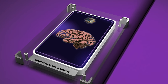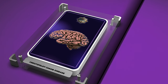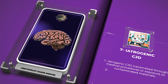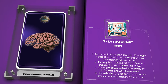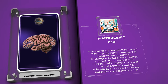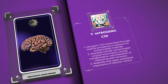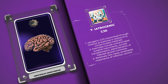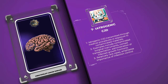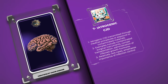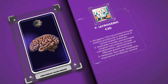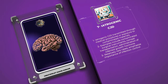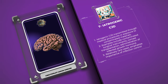Iatrogenic CJD refers to cases where the disease is transmitted through medical procedures or exposure to contaminated materials. Examples include the use of contaminated surgical instruments, corneal transplantation, and administration of human-derived growth hormone from infected individuals. Iatrogenic cases are relatively rare but underscore the importance of stringent infection control measures and adequate screening of medical products to prevent disease transmission.